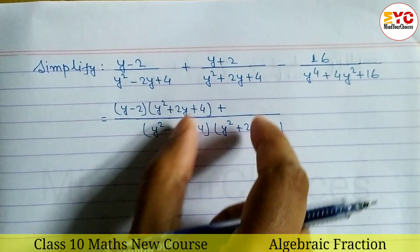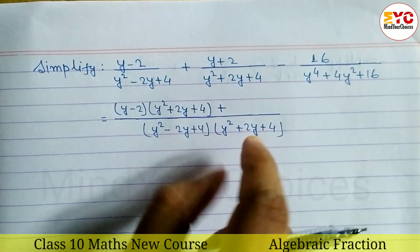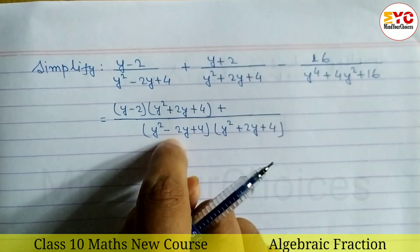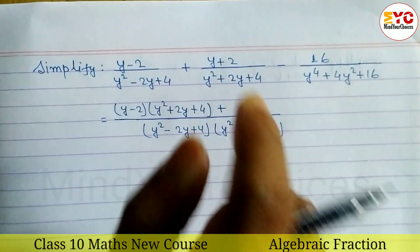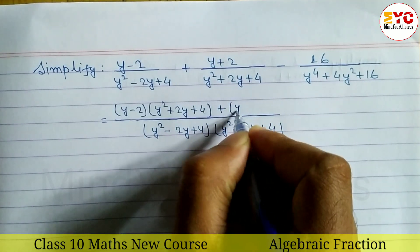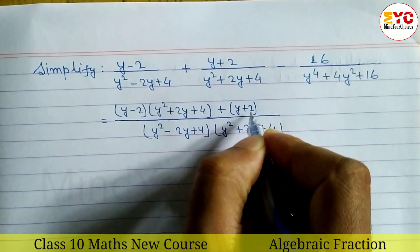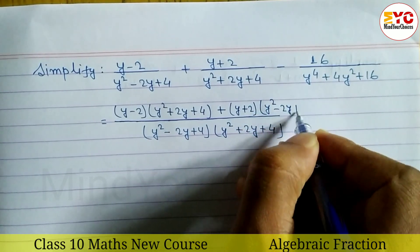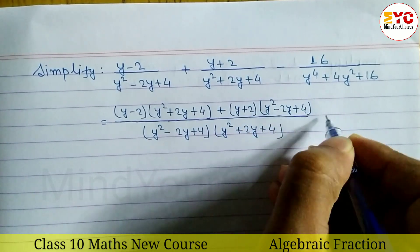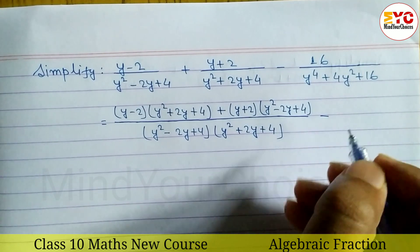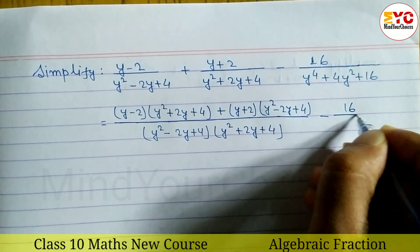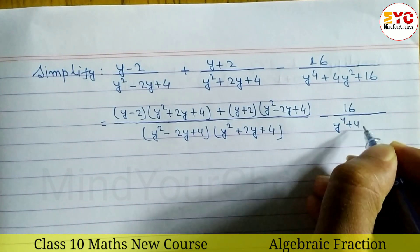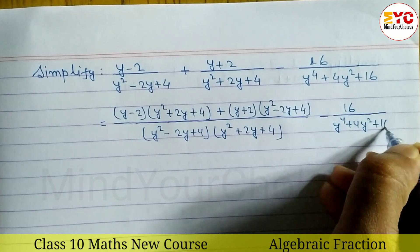It can divide evenly — y cancels the same, so cancel y. Multiply with numerator: multiply with numerator y plus 2, then y squared minus 2y plus 4 minus — same to same — 16 divided by y to the power 4 plus 4y squared plus 16.